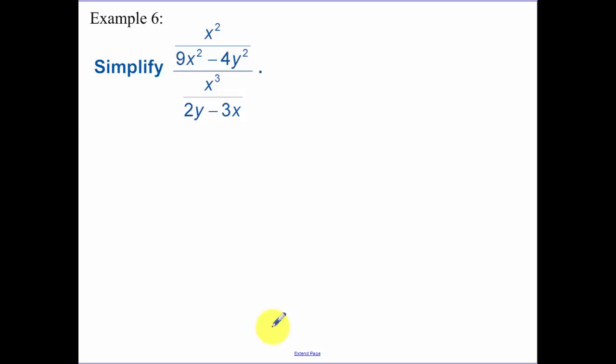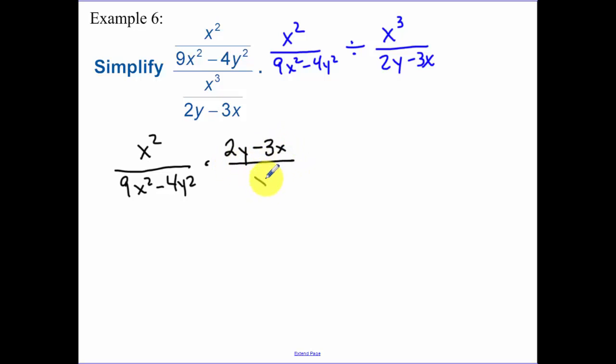Okay, our next one. This one is really a division. Take the numerator, which is x squared divided by 9x squared minus 4y squared. It's really a divided by sign, divided by the bottom, x cubed times 2y minus 3x. So again, it's that same process. Keep the first one the same, change your sign to multiplication and flip the second one. Now it's just a matter of going through and factoring.